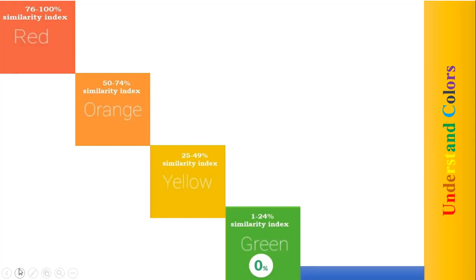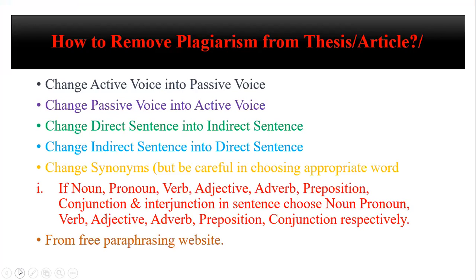If your highlighted text is in blue, purple, or any blue-type shade, that means zero percent plagiarism — your text is unique. So before doing the paraphrasing, understand which colors exist in your document, and according to that color, change the plagiarism accordingly.